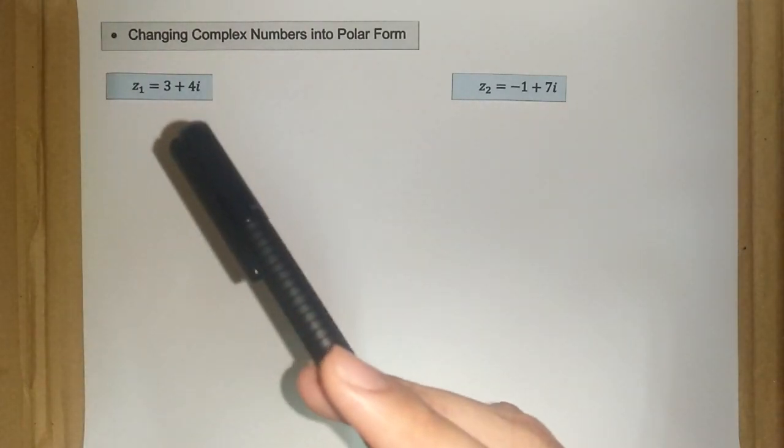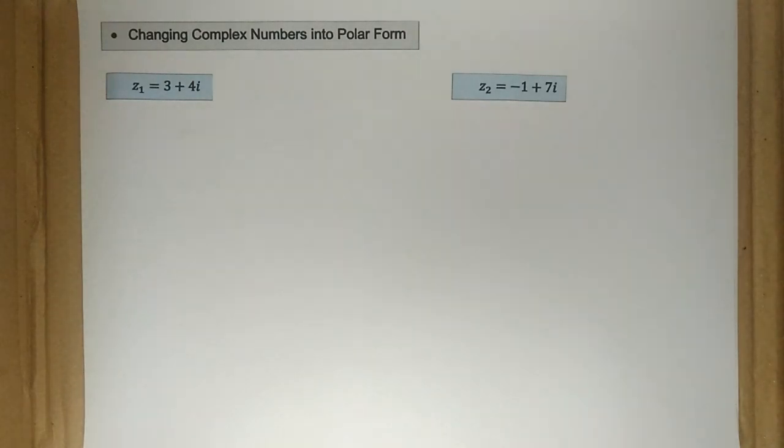Z1 is equal to 3 plus 4i. And we have talked and discussed about Argand diagram. We also talked about what it means by the modulus of z and also what it means by the argument of z. So now let's do this example.